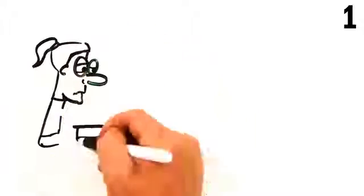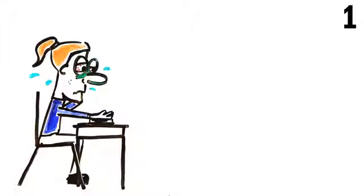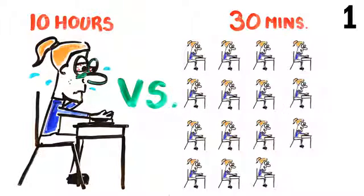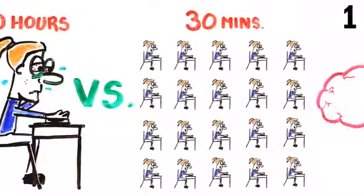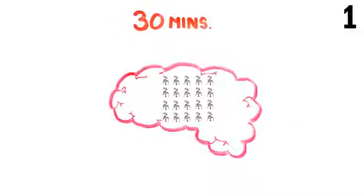First up, research shows that study sessions are most effective in small, short chunks. Instead of cramming in a 10-hour study session, it's much more effective to spread it out into 20, 30-minute sessions over a few weeks. This is because your brain is better at encoding information into the synapses in short, repeated sessions as opposed to one large one.